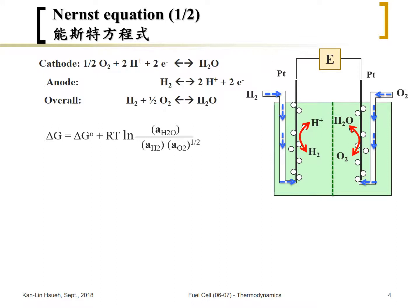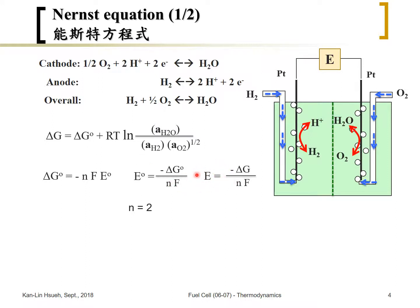Based on the free energy change, we can calculate the cell voltage at standard conditions and at other conditions by substituting into the equation. The n here equals two because one mole of hydrogen oxidized involves two electron transfers, so the electron equivalent for hydrogen equals two.